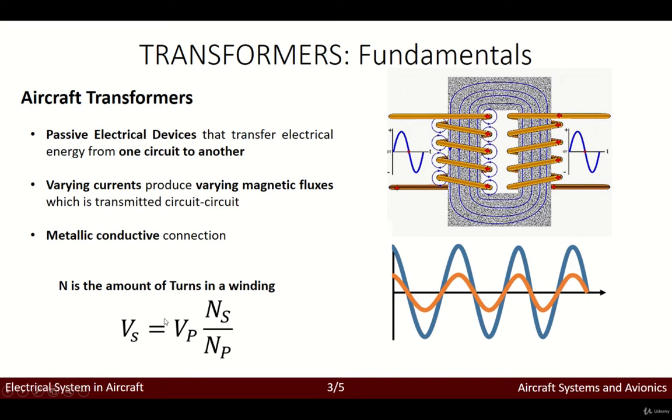What we would have is that the secondary voltage, secondary meaning this part and primary meaning this part, would be the voltage of the primary times the secondary number of turns in a winding divided by the number of turns in the primary.